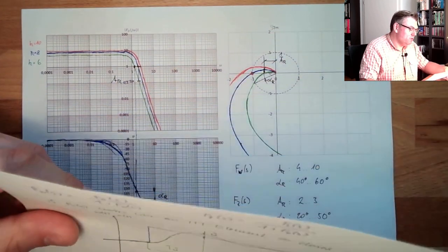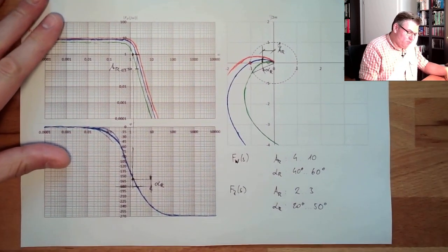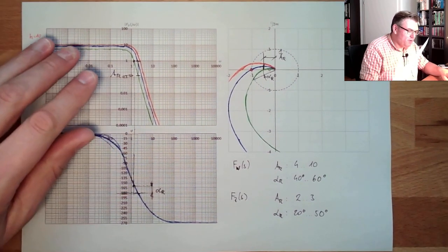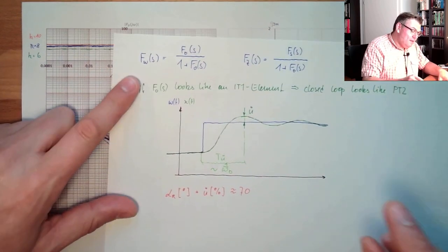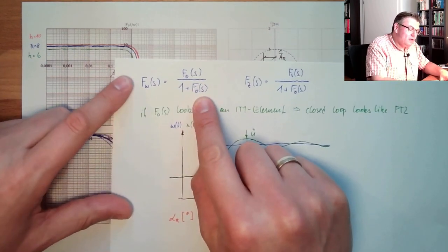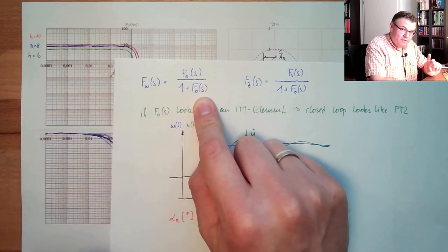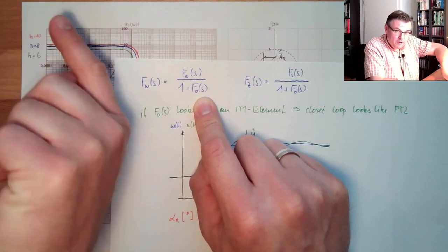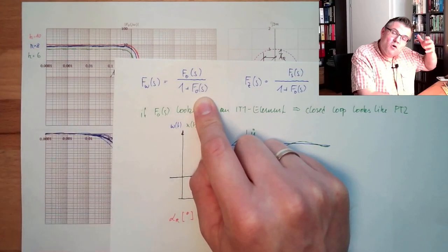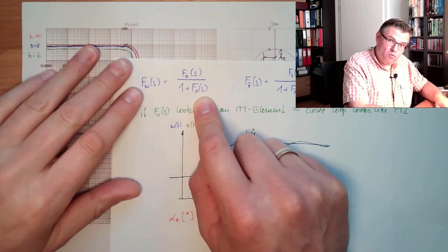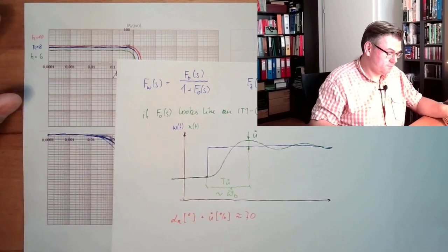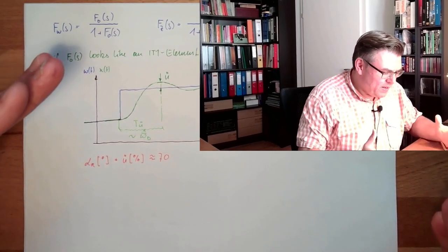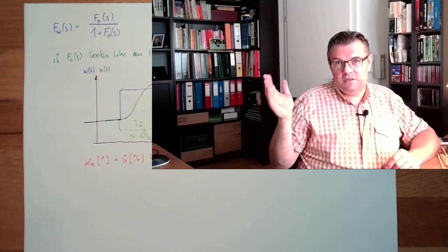This is how we design our control loop in a Bode plot. The need for a high F_O is why we want an integrating part inside the controller — at low frequencies, an I-part gives us a really high F_O. These are the basics, and I will now show examples on the computer where it will be clearer.